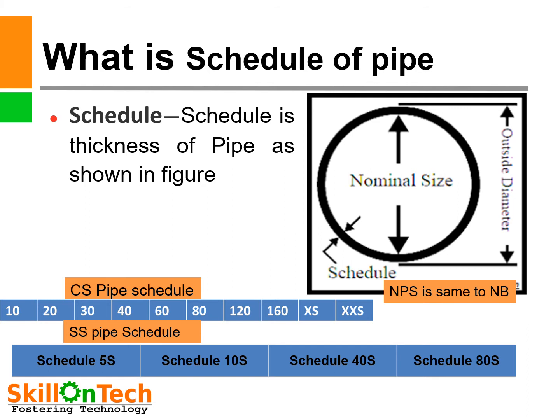SS pipe schedules are available in schedule 5S, schedule 10S, schedule 40S, and schedule 80S. All pipes shall be purchased by specifying the correct schedule.